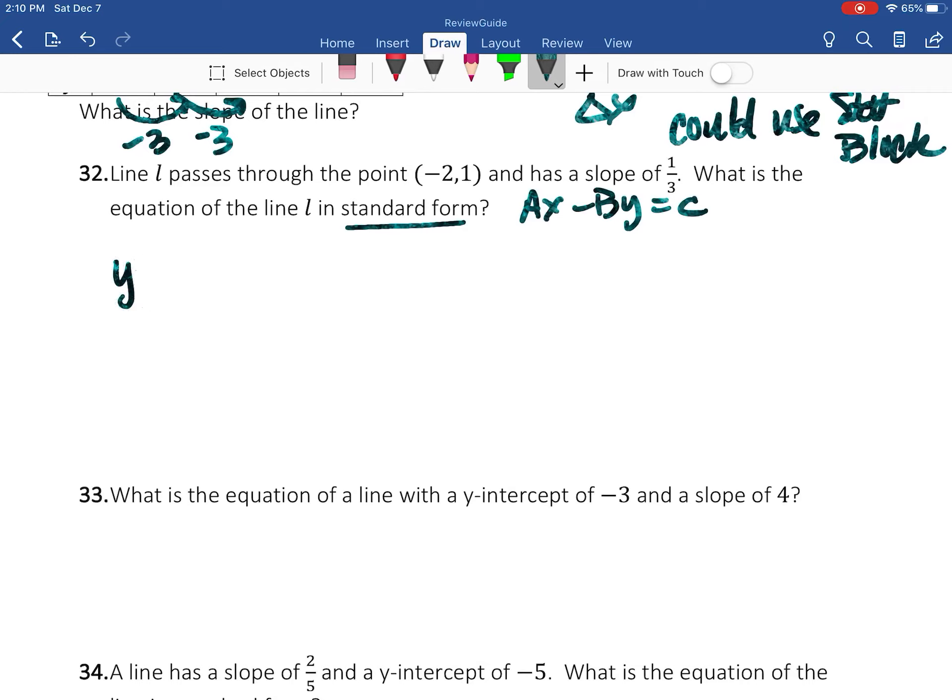I'm going to use this point and this slope. So that's going to be y - 1 = (1/3)(x + 2). I'm going to distribute. So that's going to give me y - 1 = (1/3)x + 2/3.